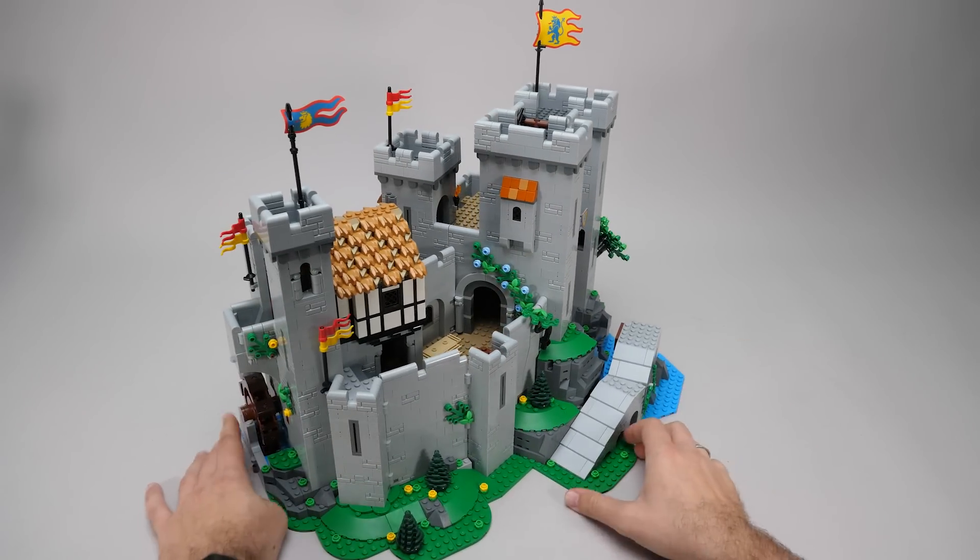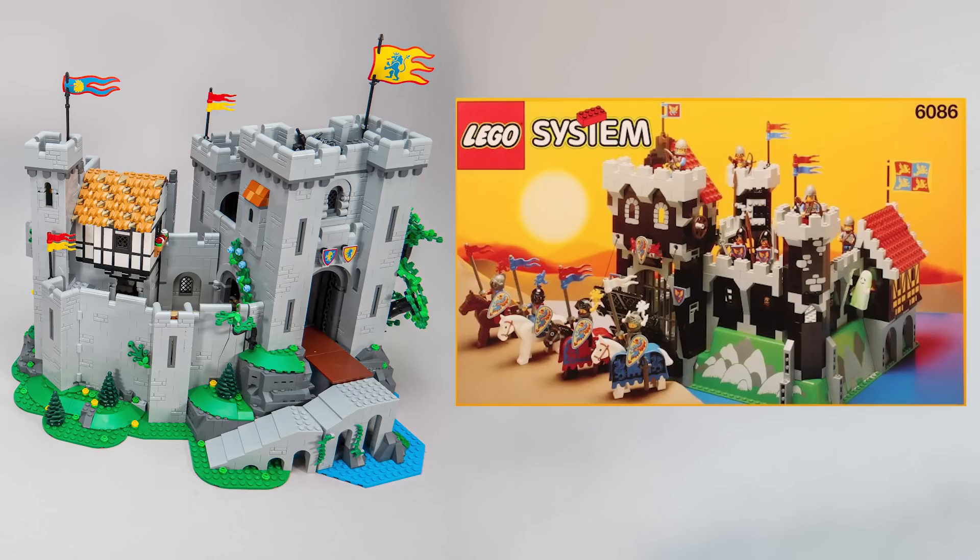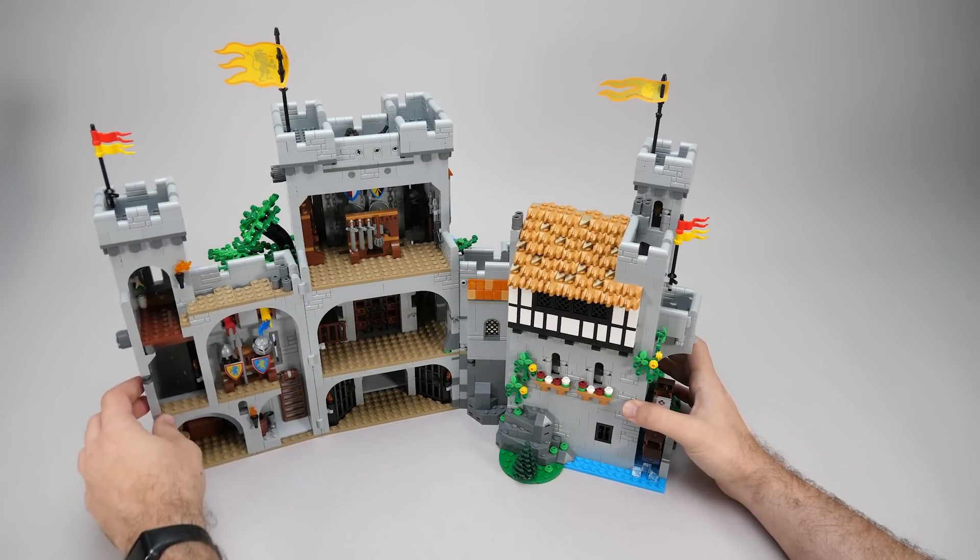Just look at this thing, it is huge! It really looks amazing from all sides. As you see, the 6086 Black Knights castle's lifted base plate was a clear inspiration for this build, but unlike that one, this can be opened as well.